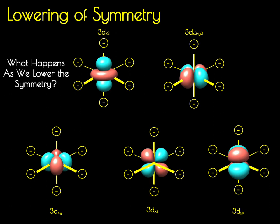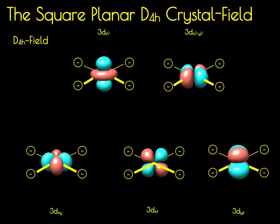To change from an Oh to a D4h field, we can, for example, remove the axial point charges — so we'd remove the ligands along the z-axis — and create a square planar complex. We're now going to ask ourselves what has happened once we remove these axial ligands.